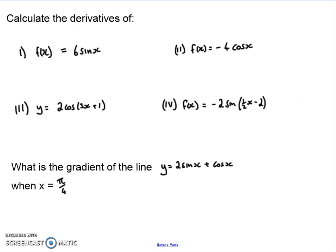Quick refresher for you, these were the questions that I sent. So a few there, calculating the derivatives of: first was 6 sine x, then negative 4 cos x, 2 cos of 3x plus 1, and the last one was negative 2 sine of a half x minus 2.